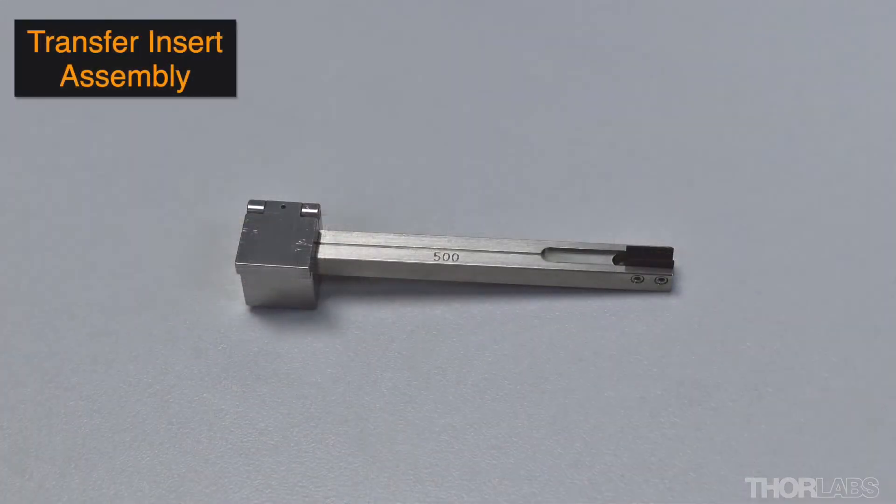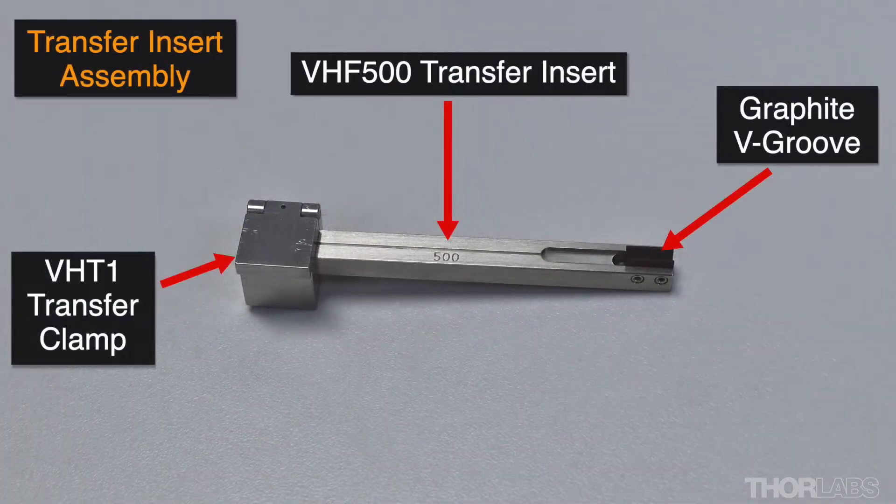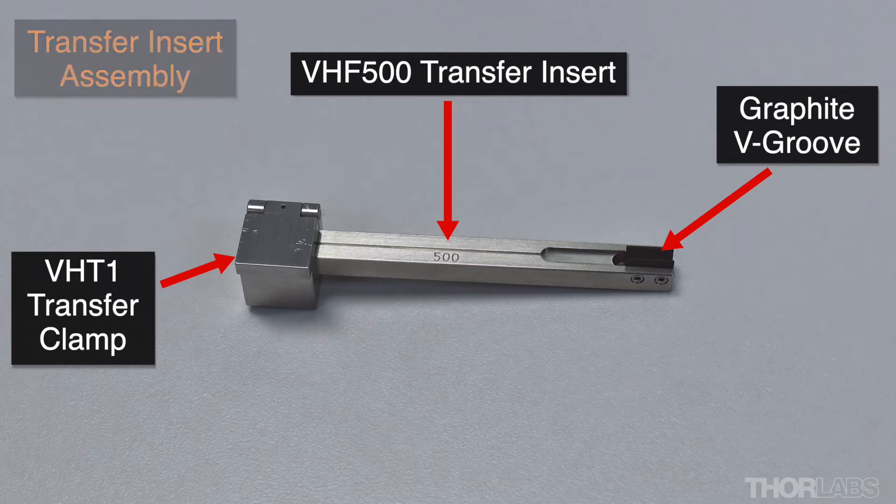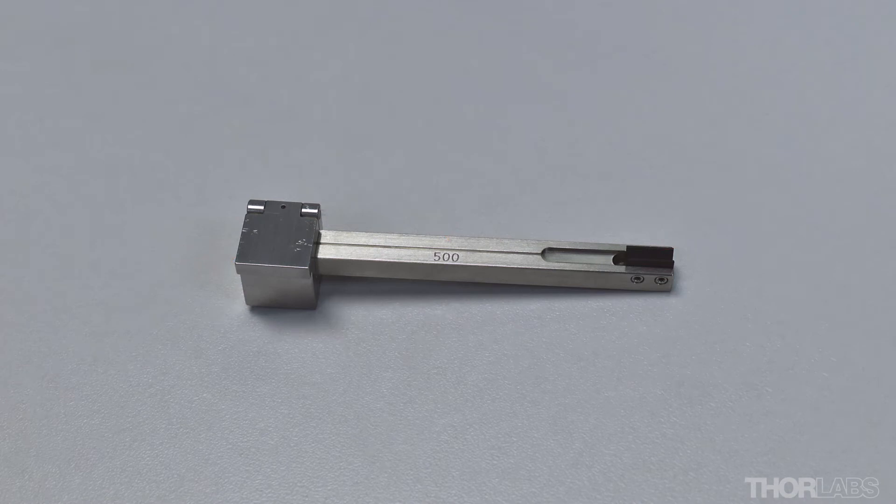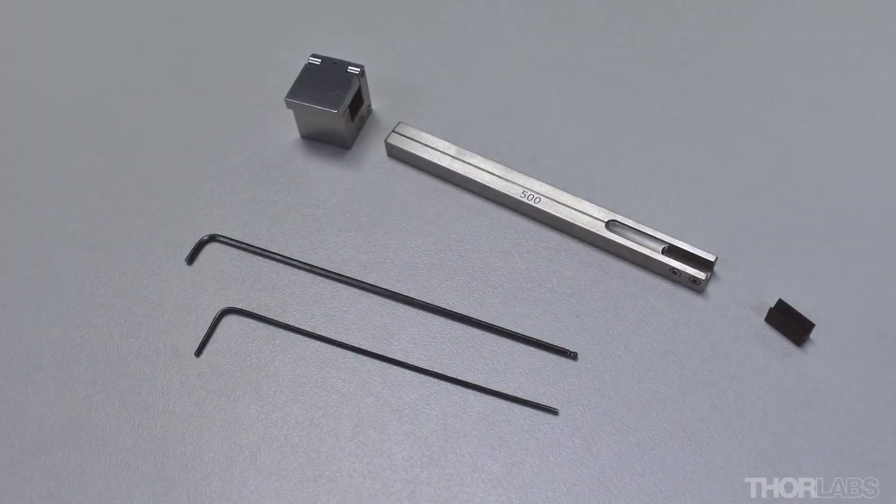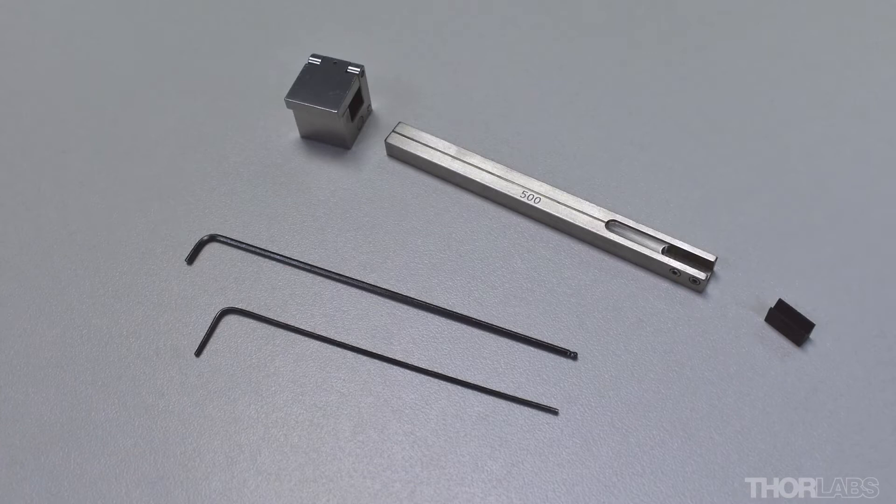A transfer insert assembly is made using a transfer clamp, a transfer insert, and a graphite V-groove appropriate for the fiber type being used. Several different sizes of transfer insert are available. To learn how to assemble a transfer insert assembly, please see the separate video that describes that process in more detail.